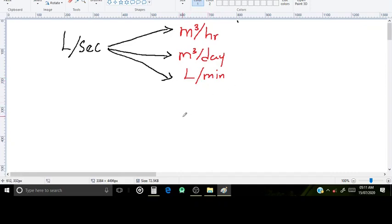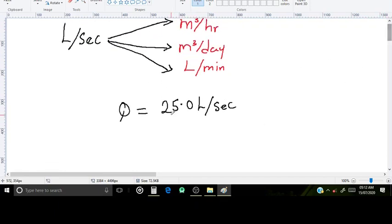This conversion is pretty handy when you're doing calculations for the rate of groundwater flow in an aquifer. The rate of discharge in a well is giving us 25.0 liters per second. I'm going to show you how to convert this to the units above.